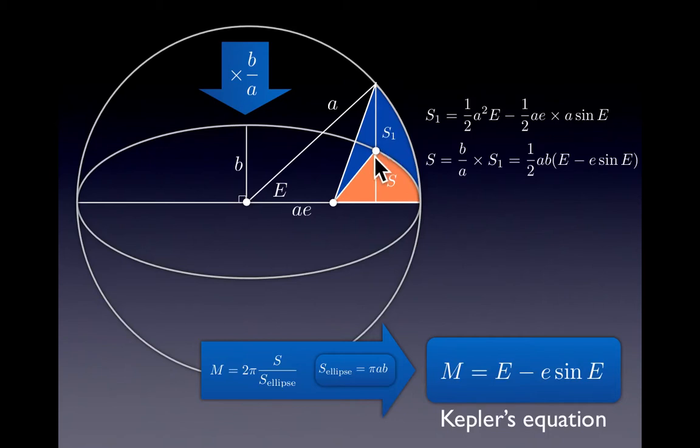This is a very useful relation between a simple geometrical angle and this time. In order to derive this relation, the key point to realize is that an ellipse is a squashed circle.